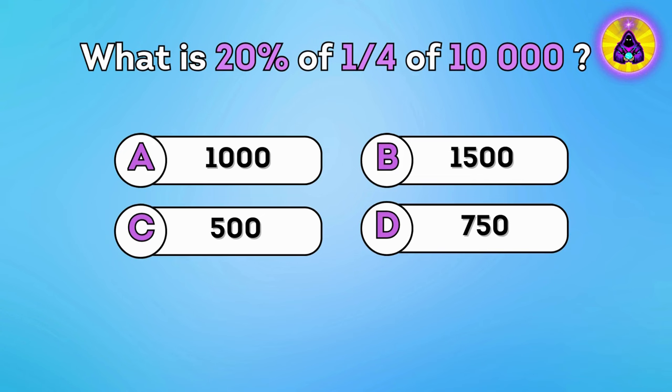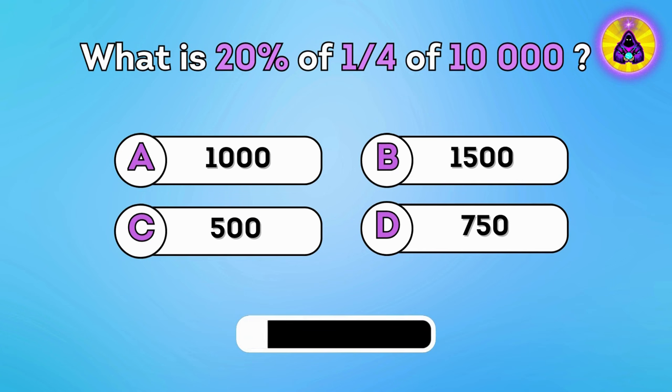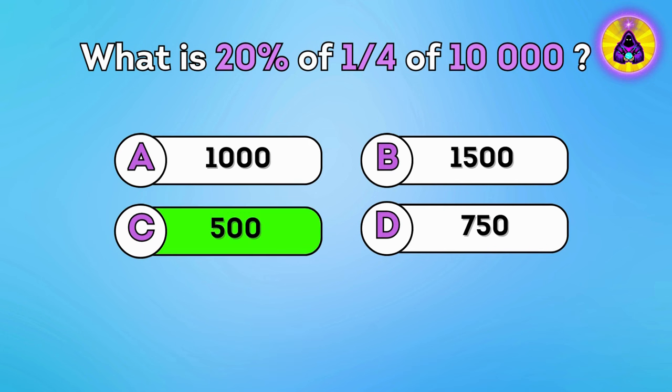Question 18. What is twenty percent of one-fourth of ten-thousand? Correct answer is C, five hundred.